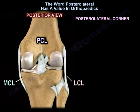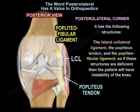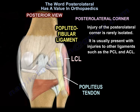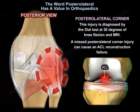The posterolateral corner is in the lateral aspect of the knee. It has the following structures: the lateral collateral ligament, the popliteus tendon, and the popliteofibular ligament. If these structures are deficient, the patient will have instability of the knee. Injury of the posterolateral corner is rarely isolated — it is usually present with injuries to other ligaments such as the PCL and ACL. This injury is diagnosed by the DIAL test at 30 degrees of knee flexion and MRI. A missed posterolateral corner injury can cause ACL reconstruction failure.